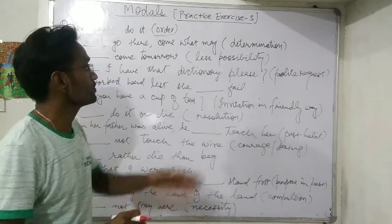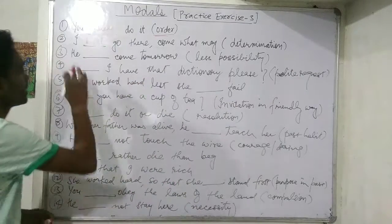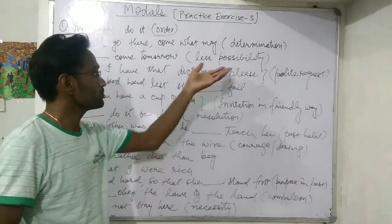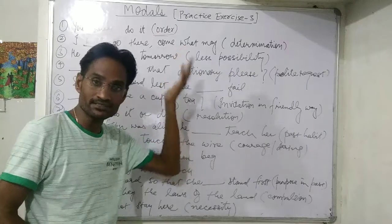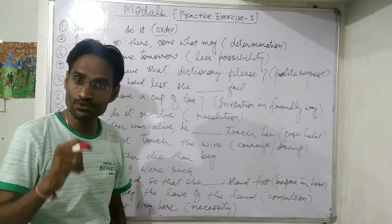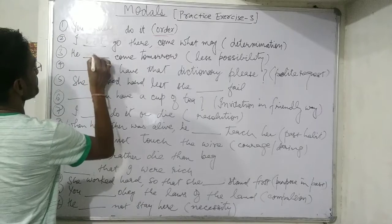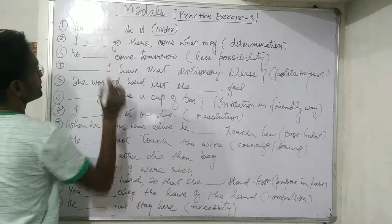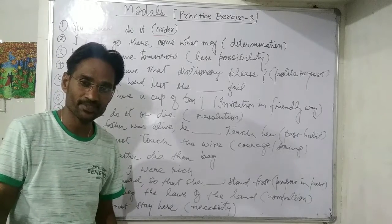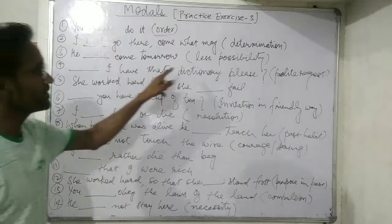Next: 'He come tomorrow' — less possibility. The possibility is less, the probability is less. So for less possibility or remote possibility, we use the modal 'might.' Therefore: 'He might come tomorrow' — the possibility is less.